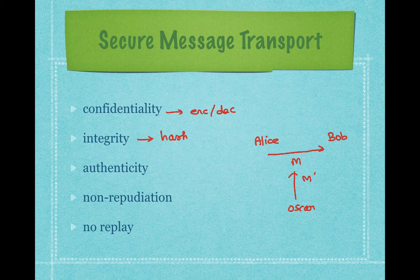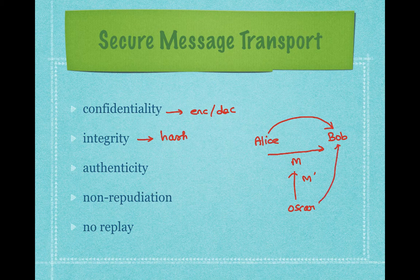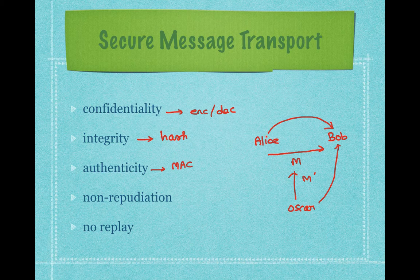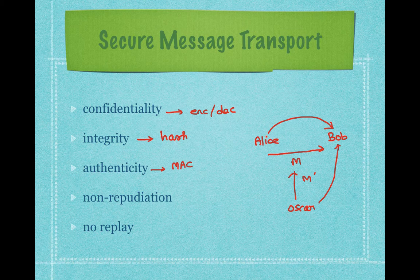The third property we need is called authenticity of the message. Authenticity means if Bob receives a message from Alice, Bob should be 100% sure that it is really coming from Alice and not from some outsider. In SSL TLS, we will use what is called a Message Authentication Code (MAC) to provide authenticity. The MAC algorithm provides both authenticity as well as integrity of the message, because the moment an outsider touches the message, it is no longer coming from Alice. So authenticity automatically guarantees the integrity of the message as well.